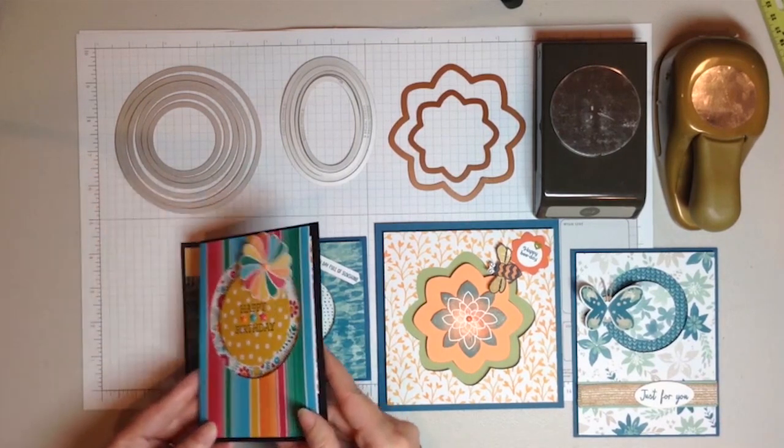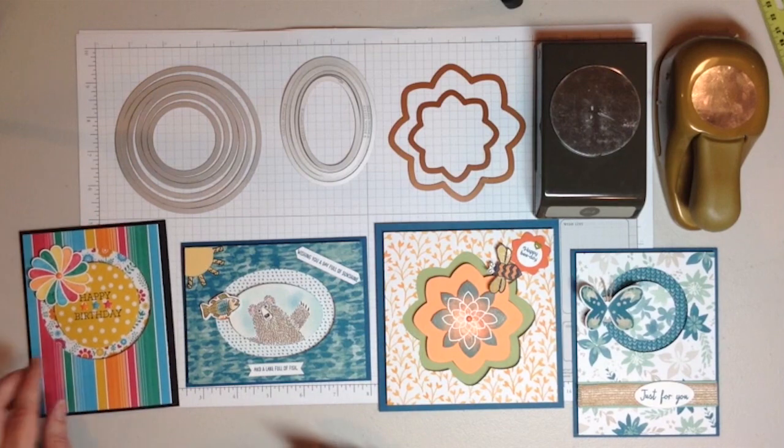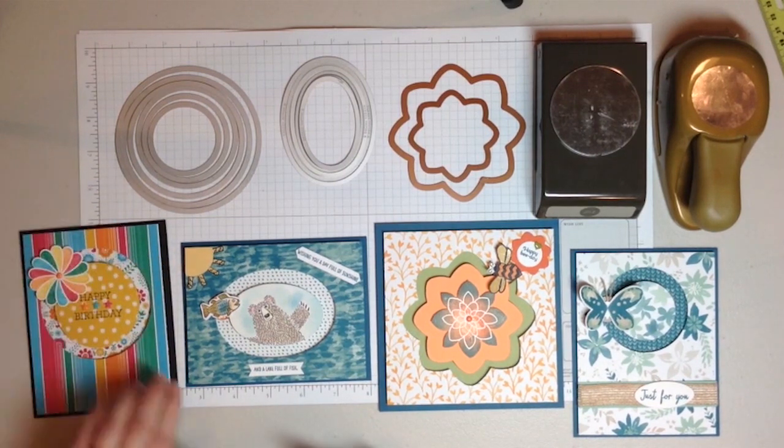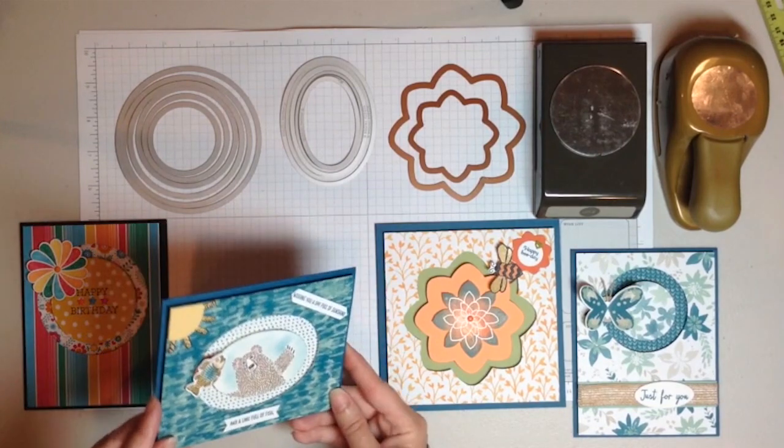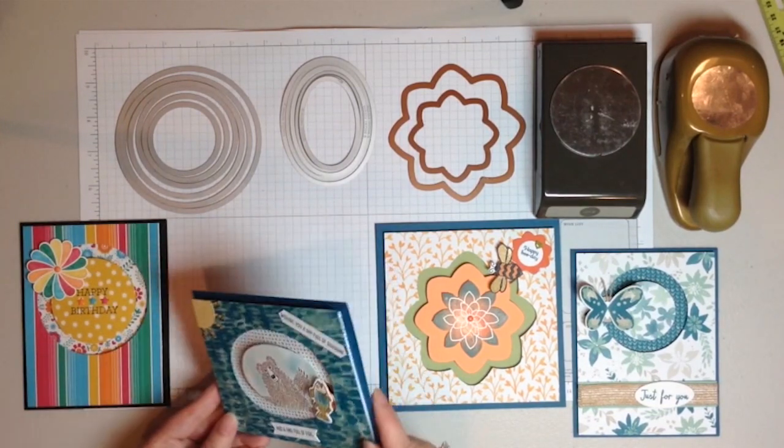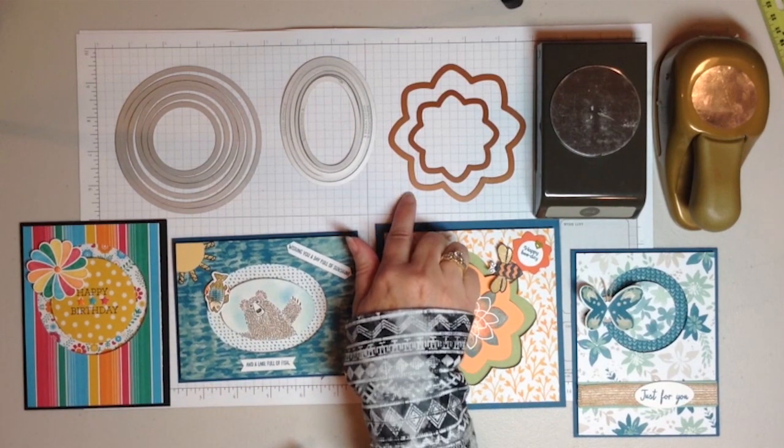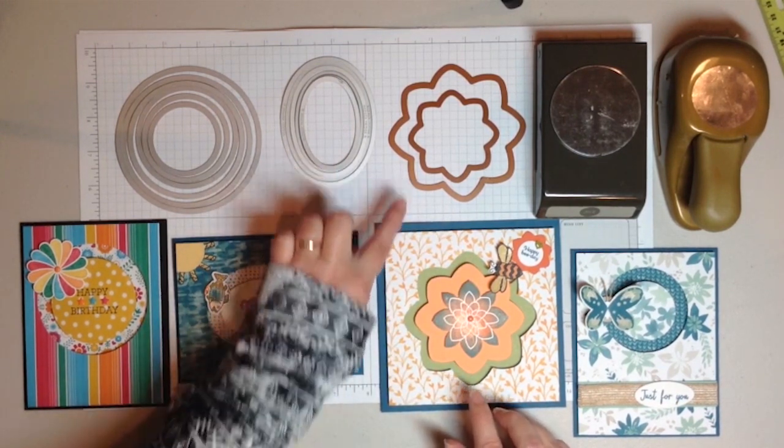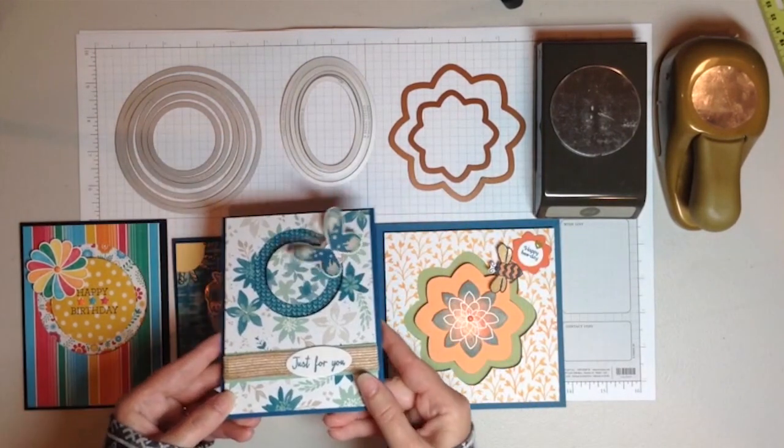This is the basic circle spinner card. This one was made with the circle nesting dies. Here's one that was made with nesting oval dies. And here is one that was made with a different shaped die, nesting dies but in a flower shape. And this one was made using punches.